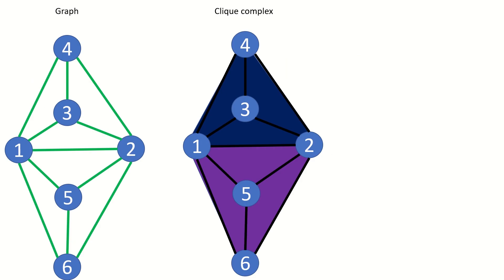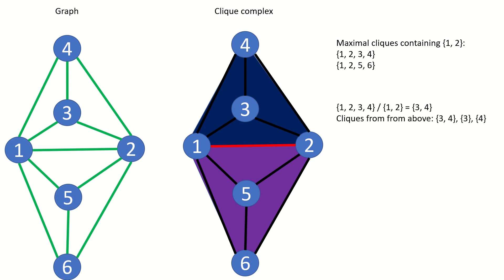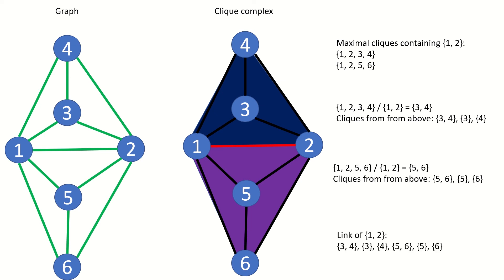As an example, let's find the link of face {1,2} in the clique complex of our graph. In our graph, the maximal cliques that contain {1,2} are {1,2,3,4} and {1,2,5,6}. The set of vertices in {1,2,3,4} that are not in {1,2} is {3,4}, and the set of cliques we can form using only those vertices are {3,4}, {3}, and {4}. The set of vertices in {1,2,5,6} that are not in {1,2} is {5,6}, and the set of cliques we can form using only those vertices are {5,6}, {5}, and {6}. Taking the union of these two sets, we get our link — the set of cliques that don't share any vertices with {1,2} but complete a clique in the graph when we take the union with {1,2}.